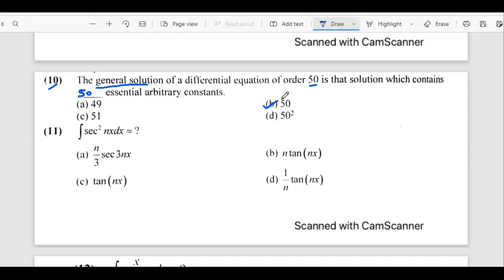The 11th question. So it says integral of sec^2(nx) dx. So for this function, we should know that the integration of sec^2 x is tan x. So this time, we have nx here. So things would change a bit and it becomes 1/n tan(nx).